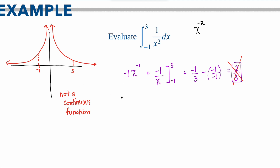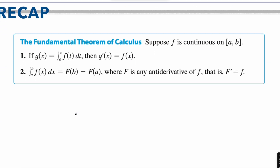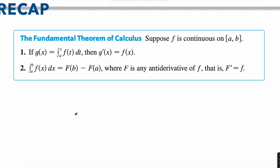Therefore, because it's not a continuous function, you actually cannot find the integral from negative 1 to 3 of 1 over x squared. So the answer does not exist. To recap: there are two parts to the fundamental theorem of calculus. Part one tells you that if g equals the integral of some function, then if you take the derivative of g, you will get the original function back. Part two states that if you take the integral, you can subtract plugging in from a to b in order to figure out what the area under the curve is.